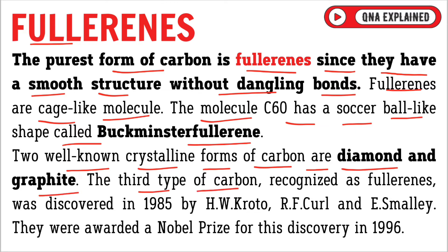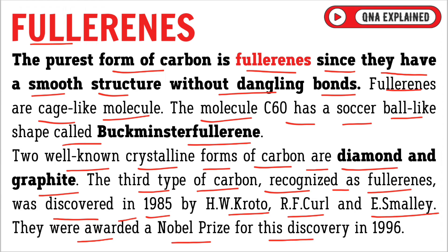The third type of carbon, recognized as Fullerenes, was discovered in 1985 by H.W. Kroto, R.F. Curl, and E. Smalley. They were awarded a Nobel Prize for this discovery in 1996.